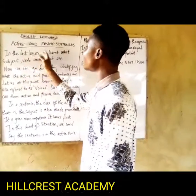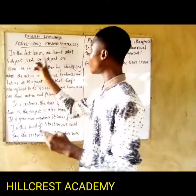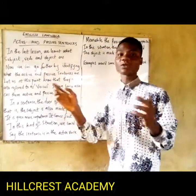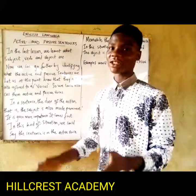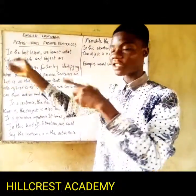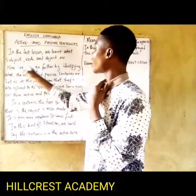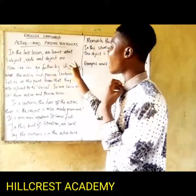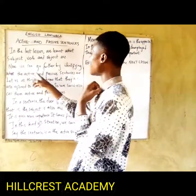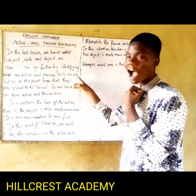In the last lesson, we learnt what subject, verb and object are. Now we can go further by identifying what the active and passive sentences are.